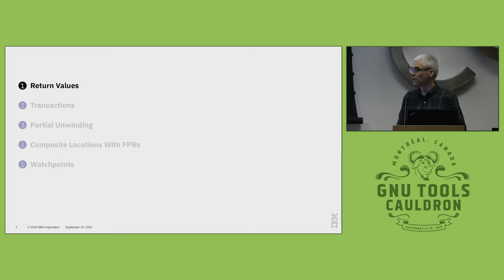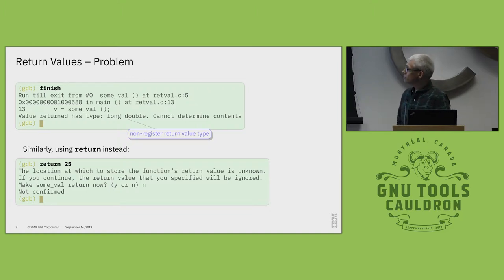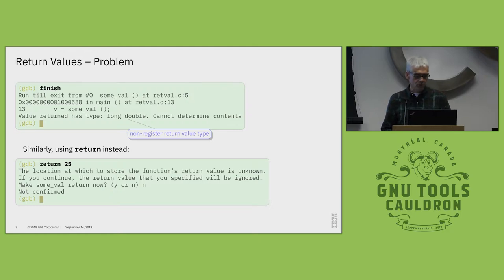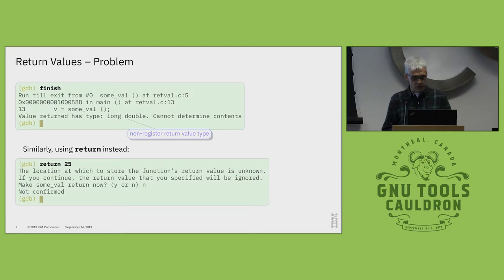The first issue is about return values. Return values usually work, but there are also cases where they don't on S390X. One example is where the return value has a type of long double. A long double return value is not passed in registers, and GDB claims that the contents cannot be determined. The same happens if you try to return from a function with such a return type. Basically, GDB doesn't know the location of the return value at this point.